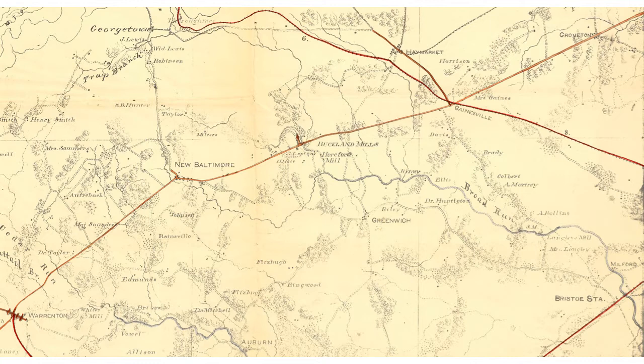Continuing eastward, Union forces successfully reached the defensive fortifications at Centerville. Rather than engage such a strong position further, Lee decided to withdraw, starting the march back to camp south of the Rapidan River. Confederate cavalry commander Jeb Stuart screened the withdrawal, moving out from Manassas along the Warrenton Turnpike, today's Route 29.